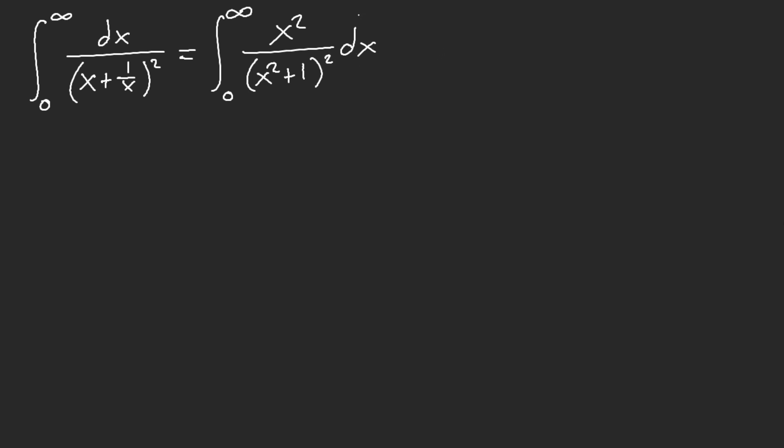And then now, let's see, pretty much we just do plus 1 minus 1. So now we have, from zero to infinity, we have x squared plus 1 minus 1 over x squared plus 1 squared dx. Just like that. And so now,